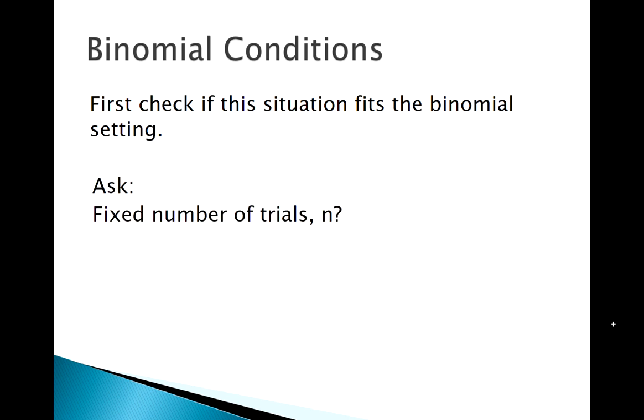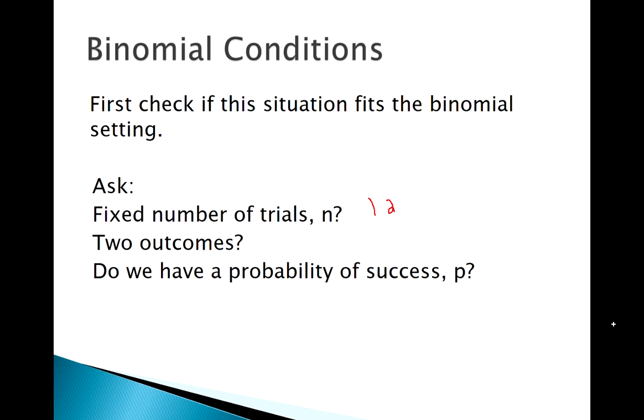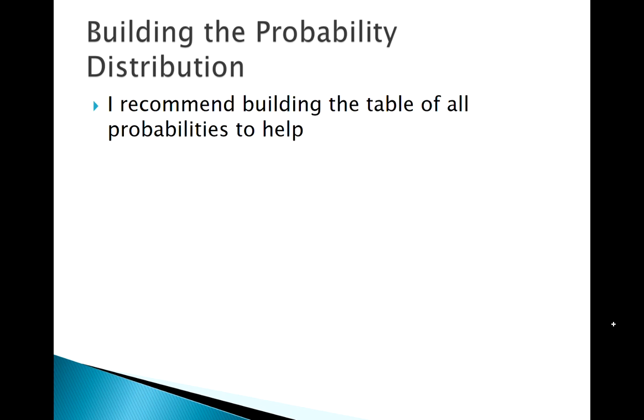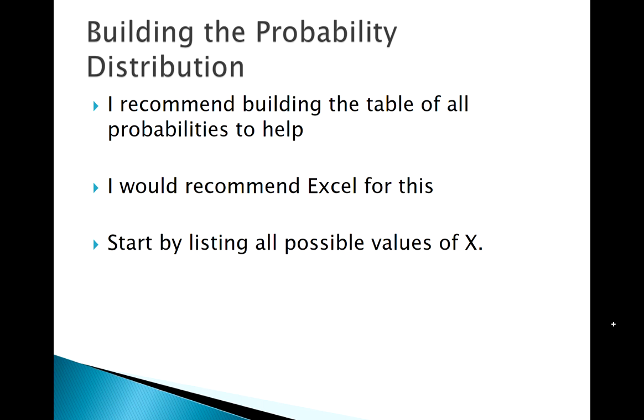Okay, first of all, we want to check our conditions. Alright, so do we have fixed number of trials? Yes, we had I believe 12 students. Two outcomes? Yes, they either graduate or not. Probability of success, that was our 0.77. Are they independent? Yes, we can assume each student's success is independent of others. Alright, so what we're going to do in this example is go ahead and build out that entire distribution. And Excel is really good for this.